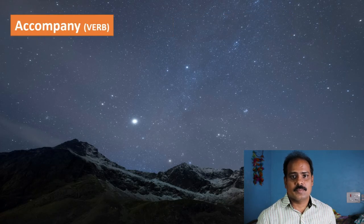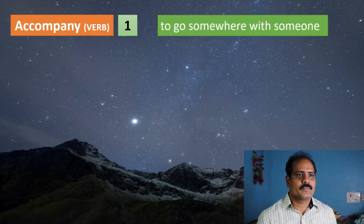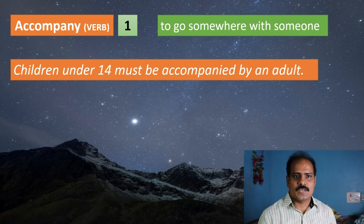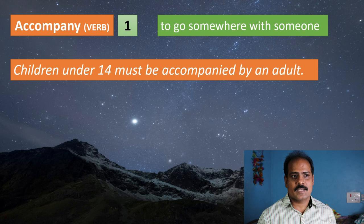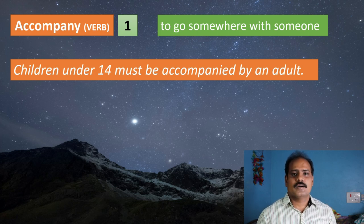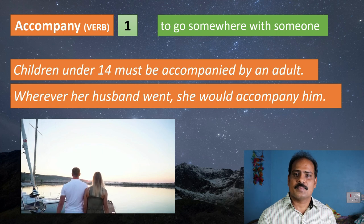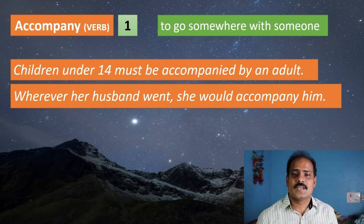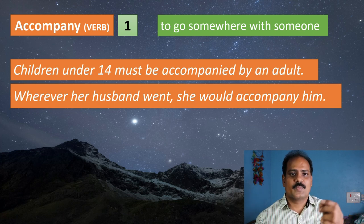Now let's learn what accompany means. Accompany as a verb has several meanings. The first meaning is to go somewhere with someone. For example: 'Children under 14 must be accompanied by an adult' — meaning an adult must go with them. Another example: 'Wherever her husband went, she would accompany him' — meaning she would go with him.